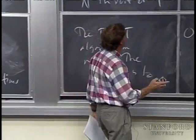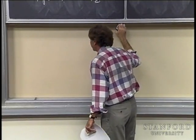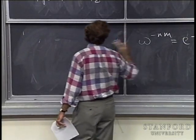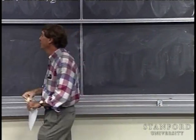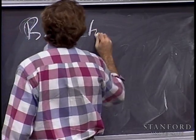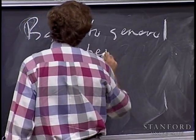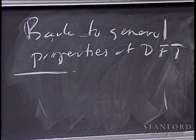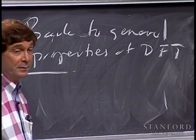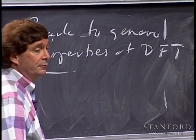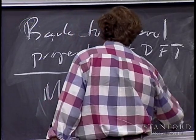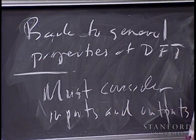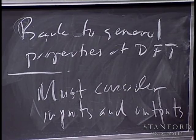Let me go back to talking about some general properties of the DFT. Last time I said there's one very important property of the DFT that's different from the continuous case, and we'd get to it later — and now it's later. That's the issue of periodicity. Both the inputs and the outputs to the DFT really must be considered to be not just discrete signals indexed from 0 to N minus 1, but periodic of period N.